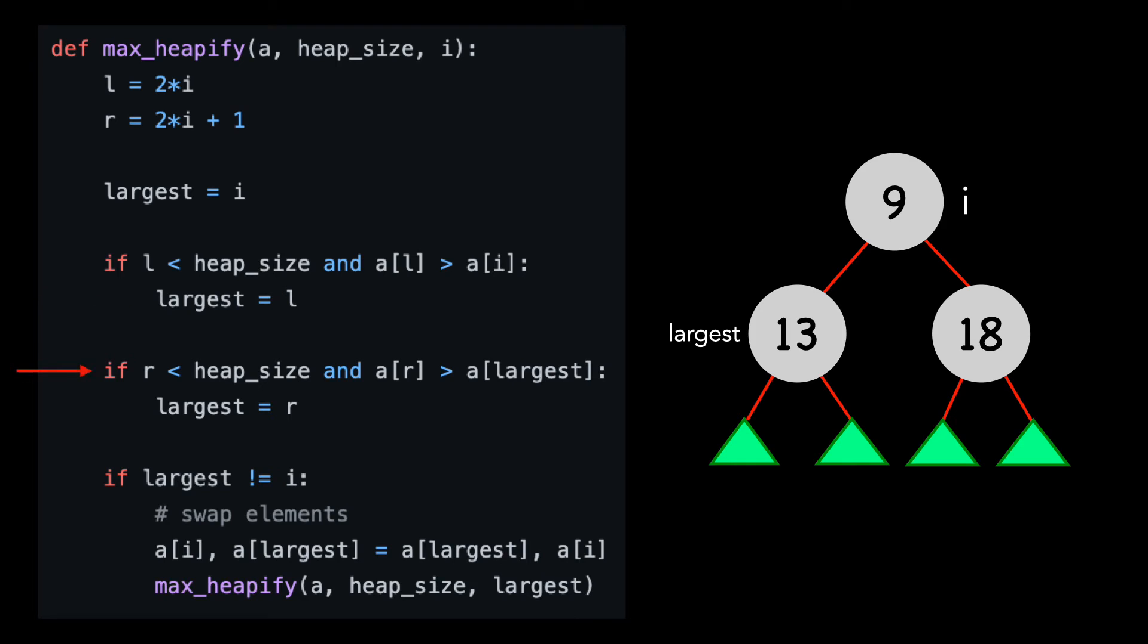We then compare the value of the right child with the value of the largest. 18 is greater than 13, so we set largest equal to the right child.